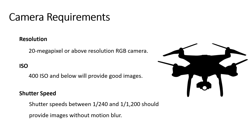The next phase is to check the camera requirements. The resolution must be 20 megapixels or above to get good high-resolution images. There are also specific parameters within the camera that you need to understand. The ISO is the camera's sensitivity to light — a lower ISO value means less sensitivity to light, while a higher ISO is more sensitive, so an ISO of 400 and below will provide good images. The shutter speed is the speed at which the shutter of the camera closes; a shutter speed between 1/240 and 1/1200 provides images without motion blur.